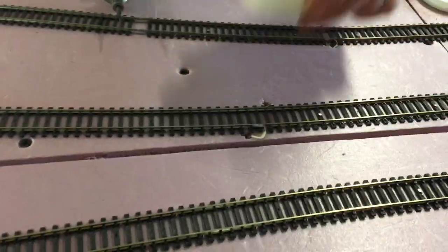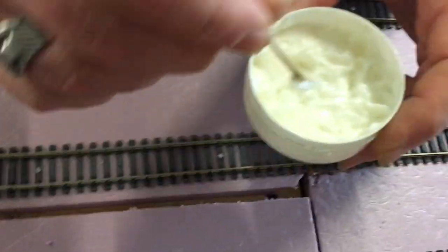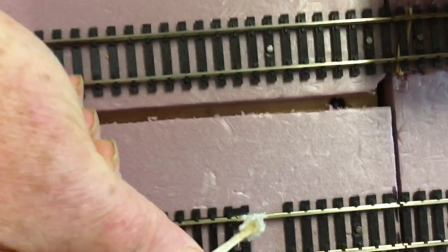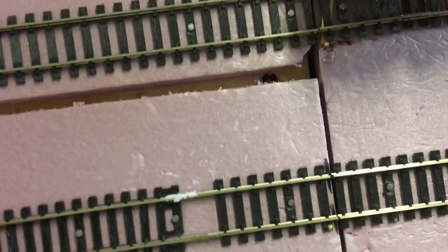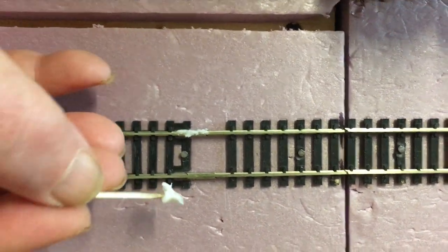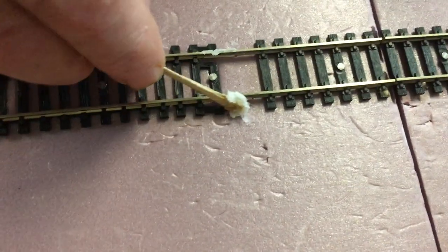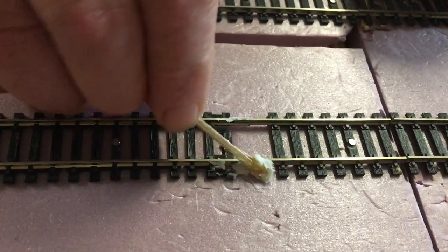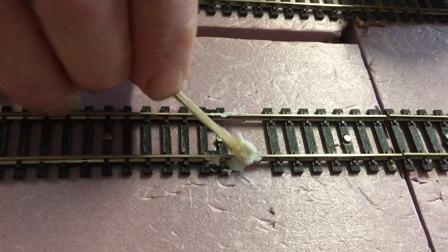So we take our little applicator and dip in here and get some flux. We just apply some right onto our rail where our joiner is located. You don't need a lot. We do the other side, just like so. That's all you need. This flux is water-based.